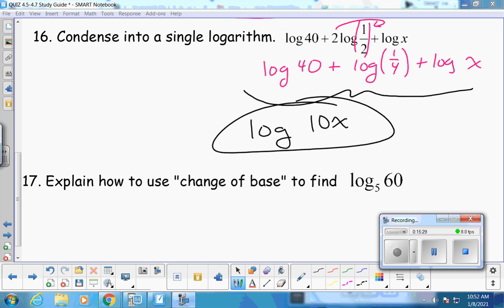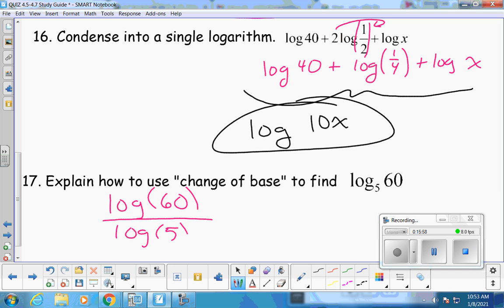All right, last one. How can we use the change of base formula to evaluate log base 5 of 60? So that basically means, let's say I have an old school calculator that doesn't have the fancy log button. Maybe that old red calculator that I used to use in 7th grade. There's a way. Do you remember from the lesson that day? You would do log 60 divided by log 5. These are base 10 logs. Because most calculators have a log base 10 button. But not necessarily the special log button. So log 60 divided by log 5. 2.54. Thanks to everybody at home for watching our video today.